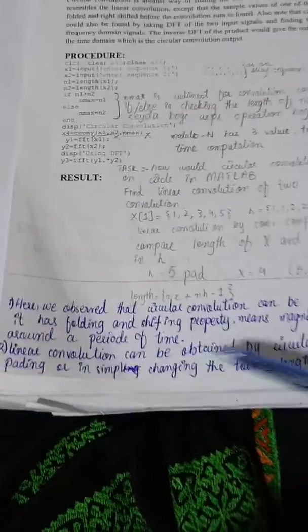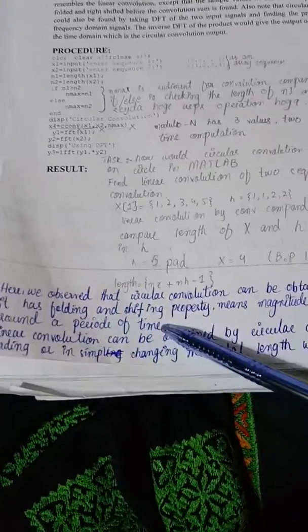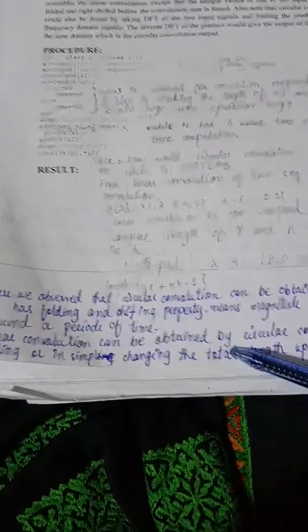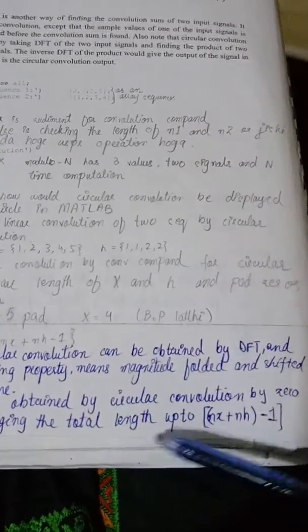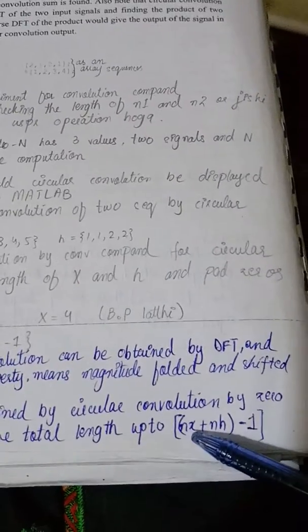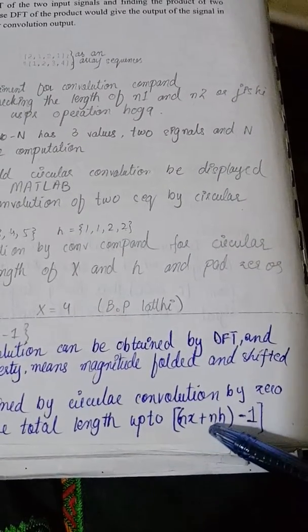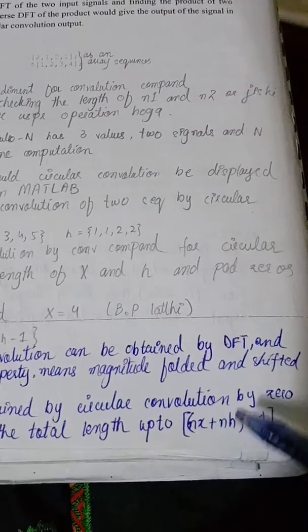How can we obtain circular convolution with the help of linear convolution? By zero padding, or just by increasing the length of signal from nx plus 1 to nx plus nh minus 1.